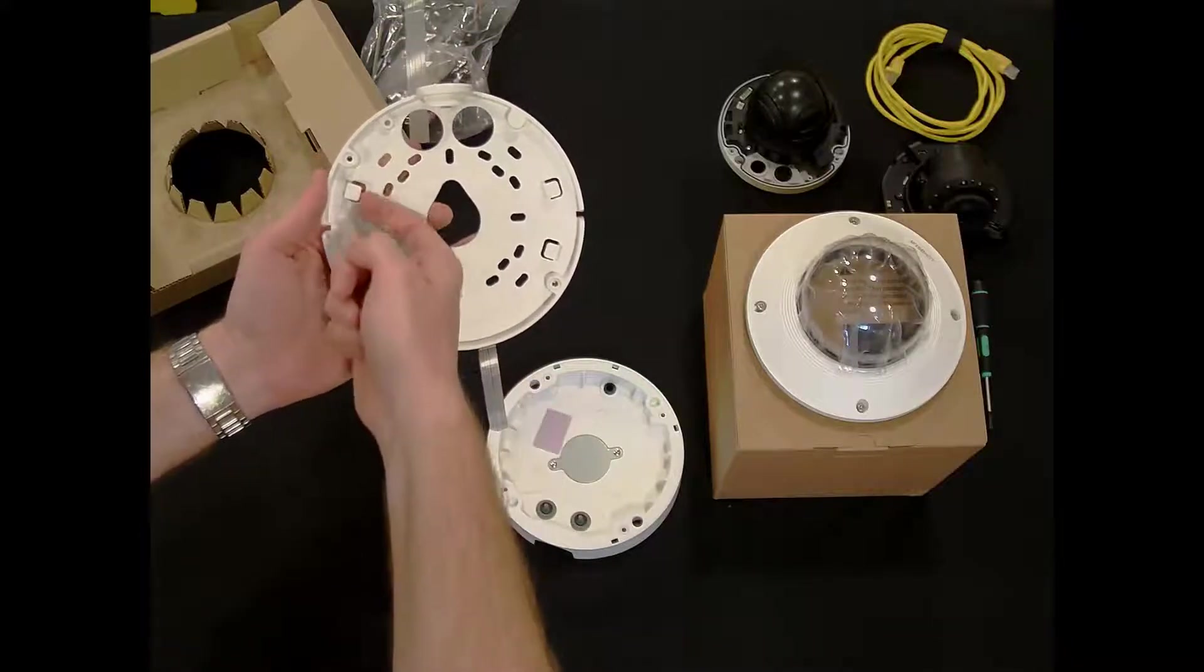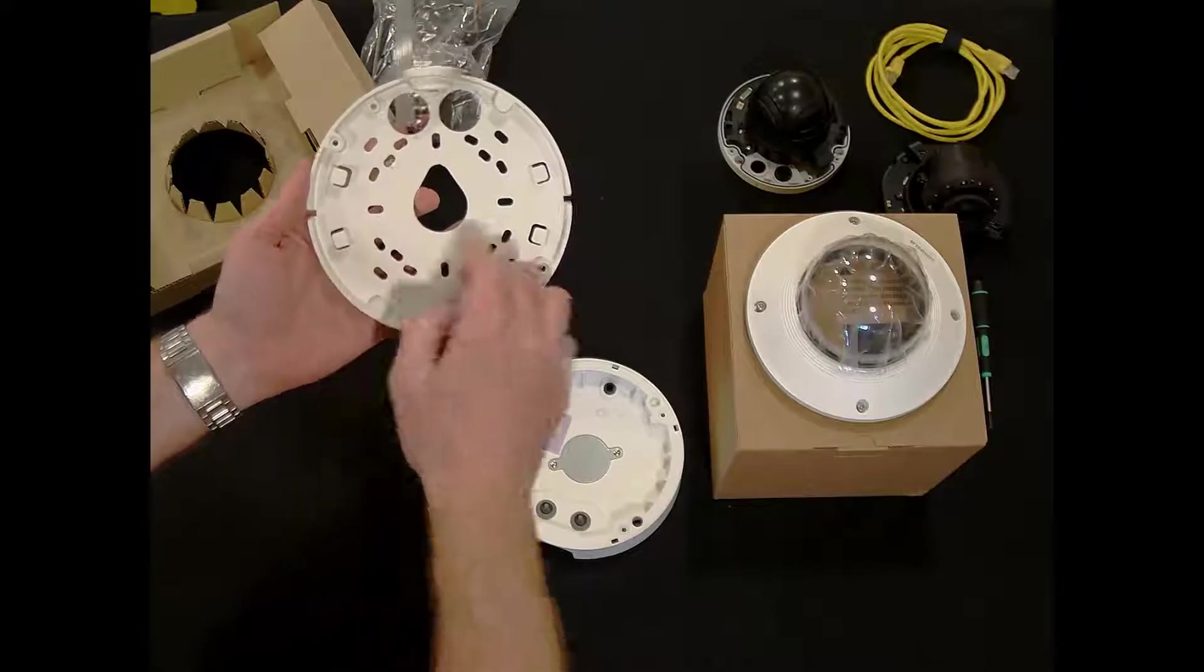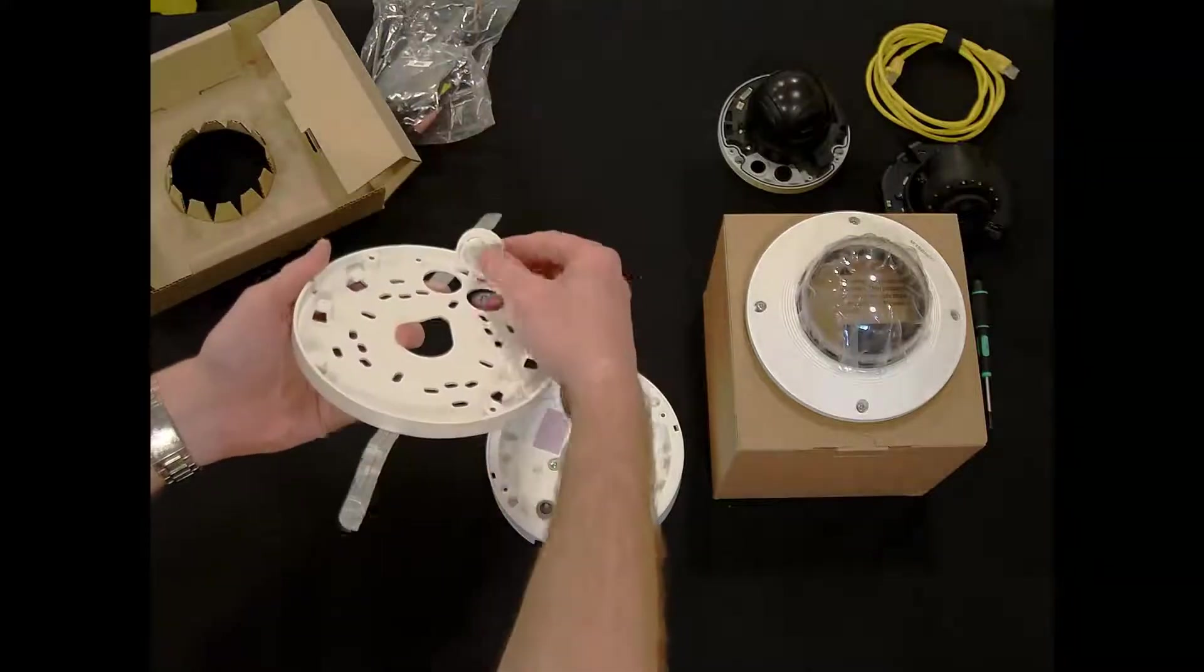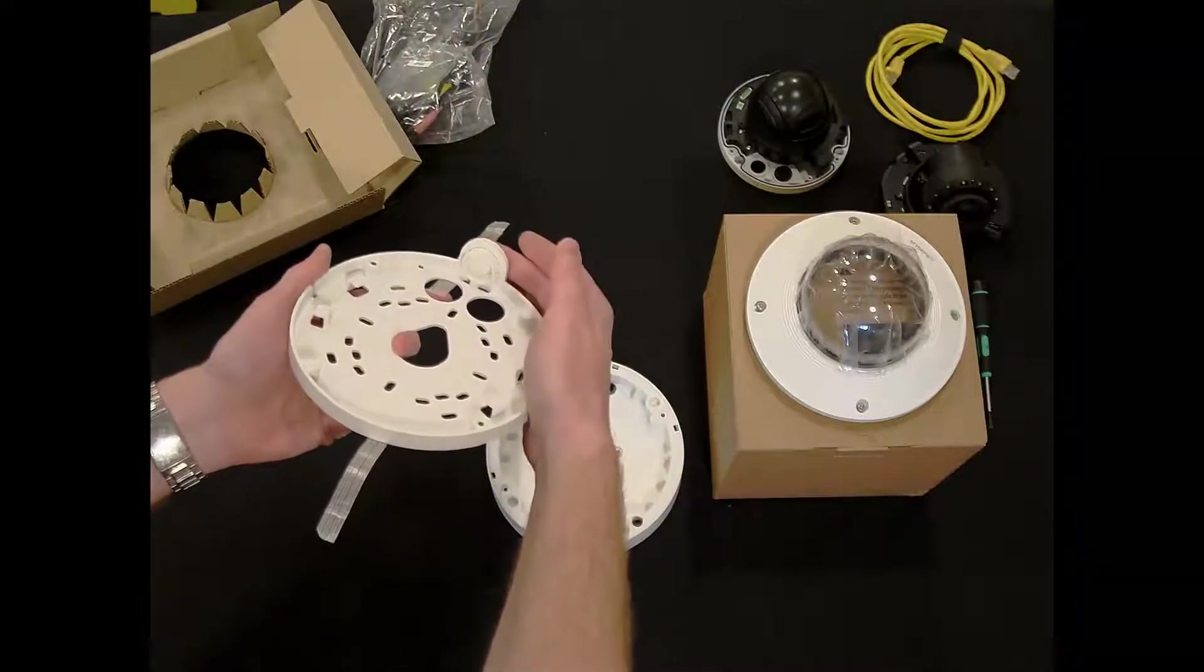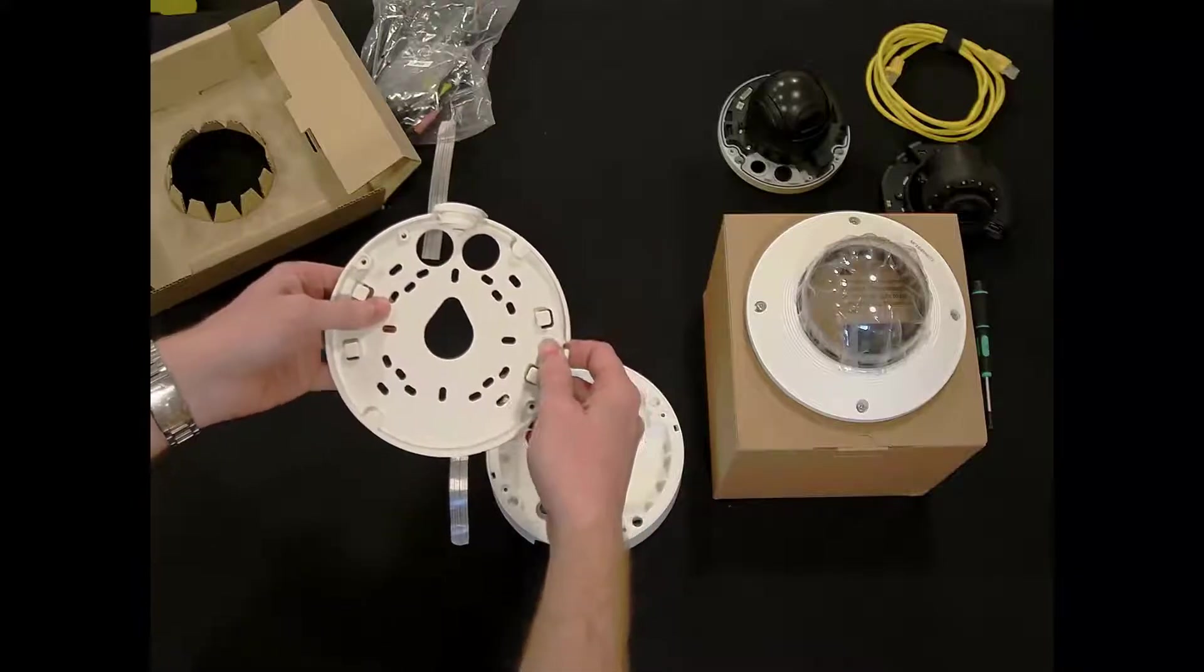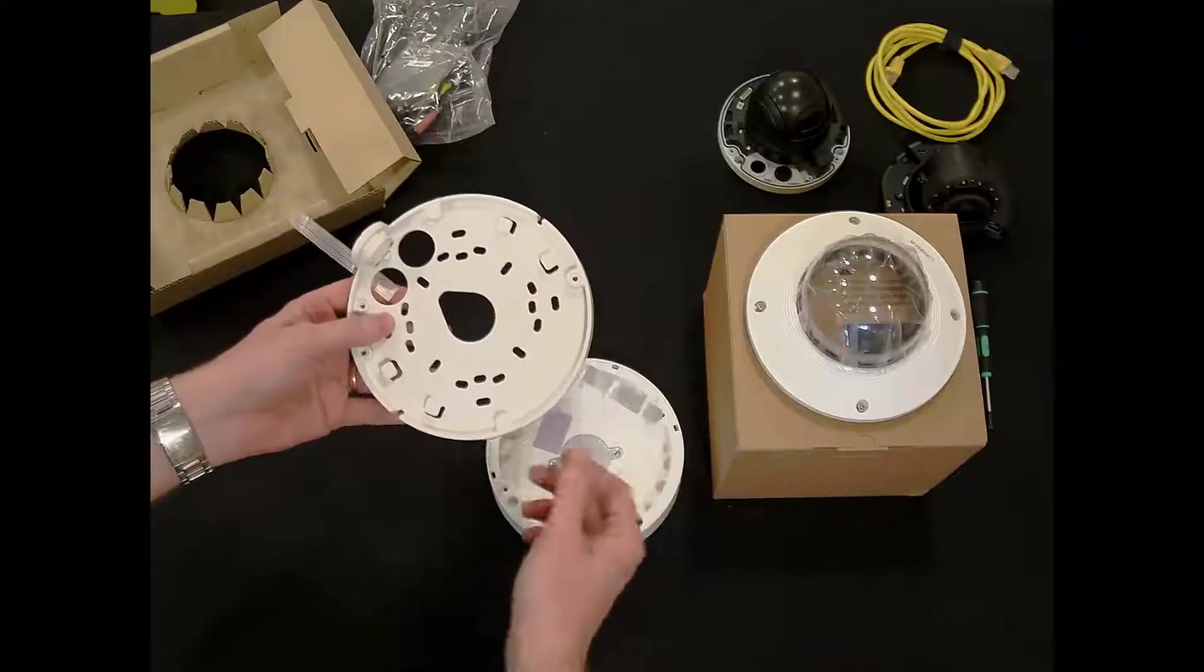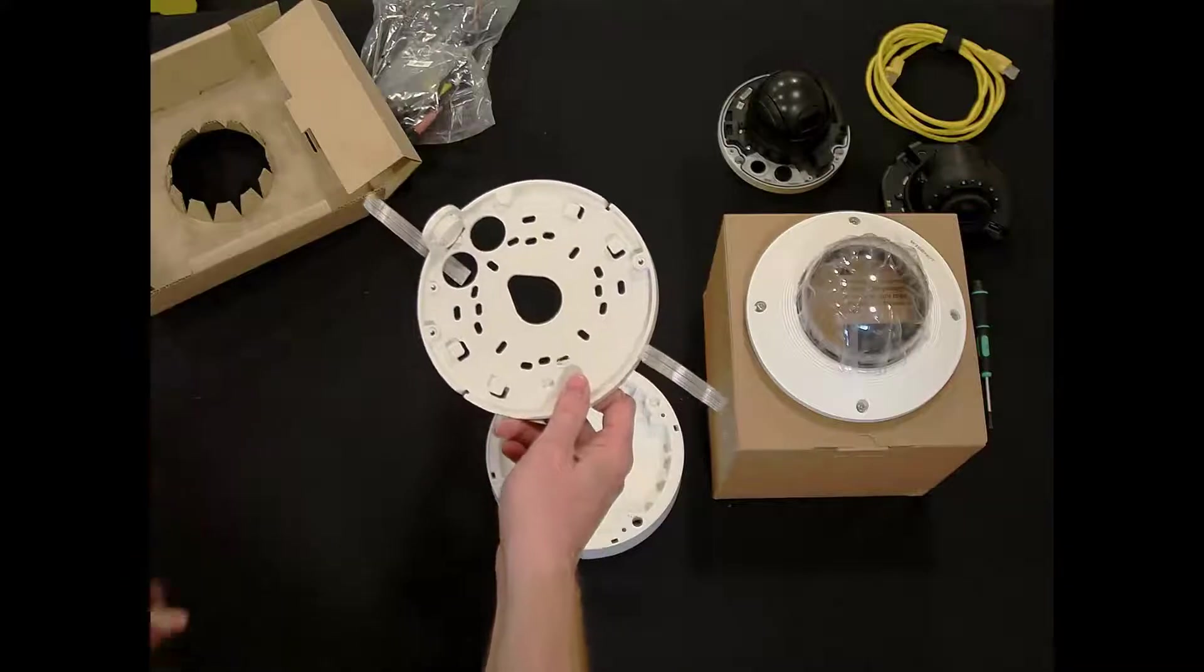We also have cable management access right here to route your cables, and a removable conduit access. And that conduit is on the plate, not the camera. So if you have to remove the camera from the wall, you don't have to remove your conduit.